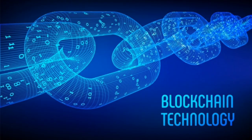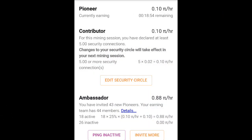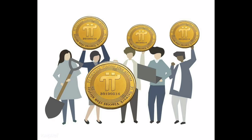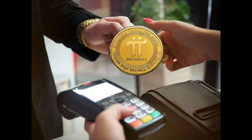In summary, you must hold the pioneer role as well as the contributor role — this will allow you to build a PI node. PI nodes are only one of four ways to earn more PI. You can earn more PI through a PI node through transaction fees, whenever the volume of transactions is a lot higher than usual.